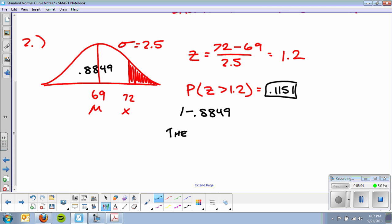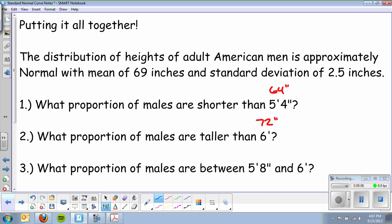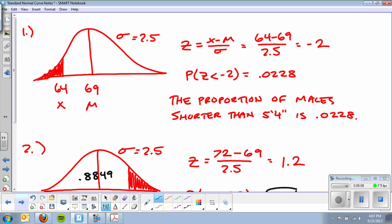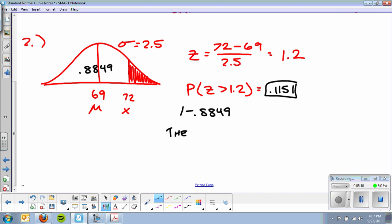And then I write a sentence in the context. The proportion, I believe it said proportion, of males taller than 72 inches or 6 foot is 0.1151. And there's my context.